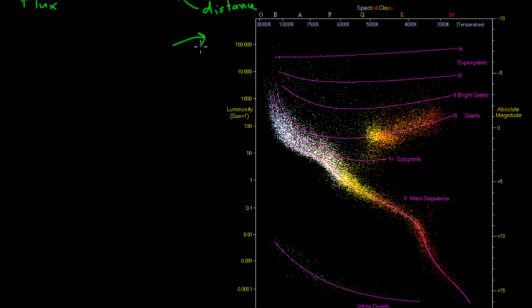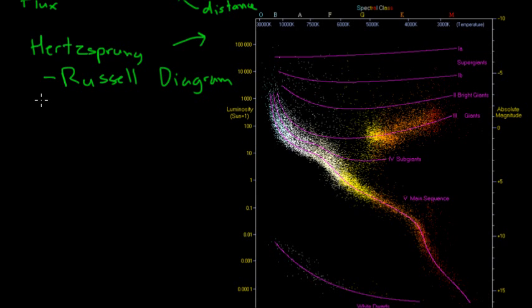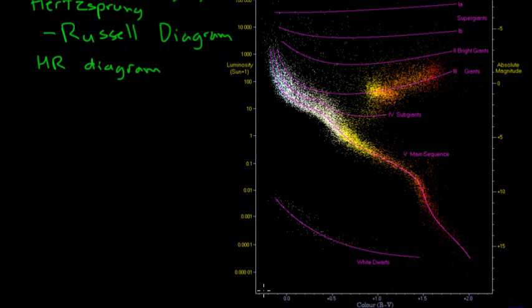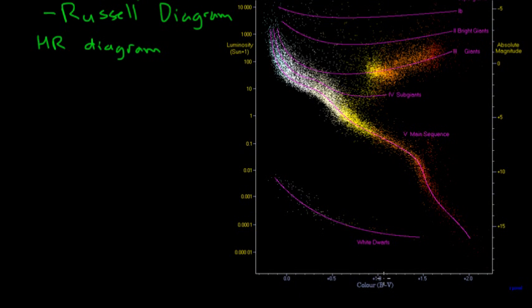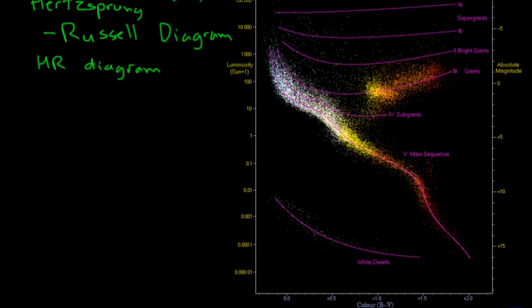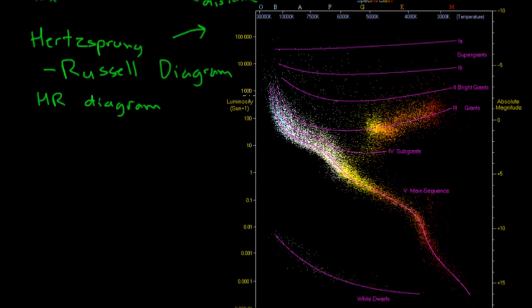This diagram is known as the Hertzsprung-Russell diagram, very often abbreviated as HR diagram. And what this does is it takes the color of the star, so this at the bottom is a measurement of color, and plots it against how bright the star actually is.